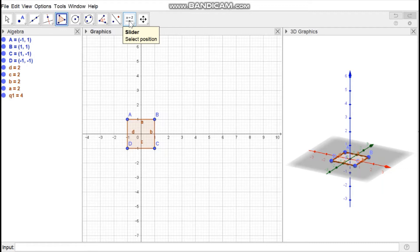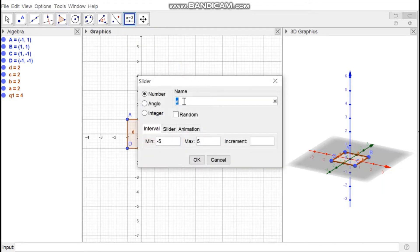Then create a slider named h with minimum value 0 and maximum 5. Then press OK.